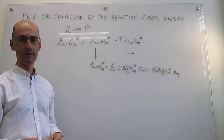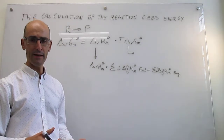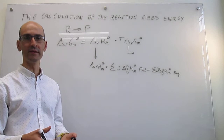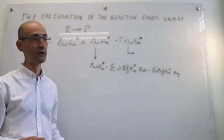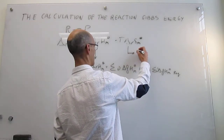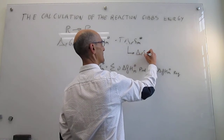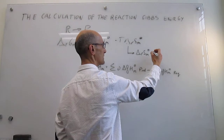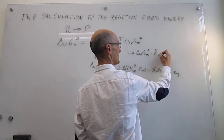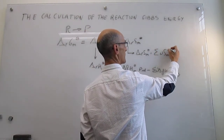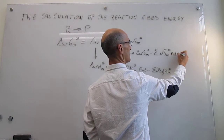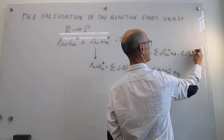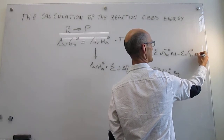For the entropy we do the same thing, but we do not use enthalpies of formation — instead we have absolute entropies, also called third-law entropies. The standard molar entropy change of a reaction is just the sum of the standard molar entropies of products minus the sum of the standard molar entropies of reagents, under standard conditions.